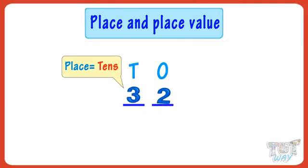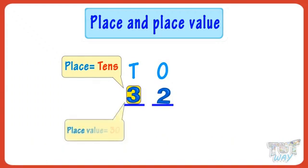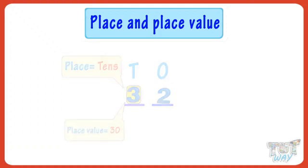Place value. It is how much the digit is worth or the value it holds to be at that place in the number. Example, place value of 3 in this number is 3 tens or 30. Let's learn the concept with more examples.